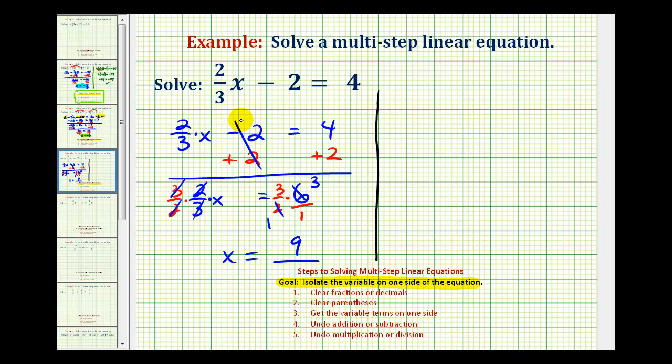Now the second method of solving this would be to clear the fractions in the first step and then solve the resulting equation. Since we have a denominator of three if we multiplied every term by three we would clear the fractions. Let's go ahead and try that. Again because we have a denominator of three we would multiply every term by three. As long as we do the same thing to both sides of the equation we maintain equality.